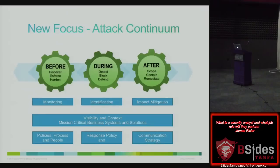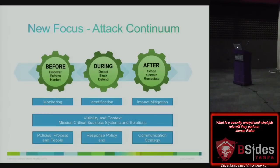I want you to start thinking about the attack continuum — before, what you can do. Remember, it's a people problem, but you need to align your people with your processes and your policies, build that up, and then start monitoring. Identify data and trends — are you baselining network traffic? At 1 o'clock in the morning you have 2% network activity, except on Tuesday and Thursday nights when you suddenly have 13% network activity going out of your network. What's going on? Why aren't we looking at this? Impact mitigation and your communication strategy — Target wasn't ready. Home Depot, a little bit better, but still not ready. Now they've got 40 lawsuits out against them.